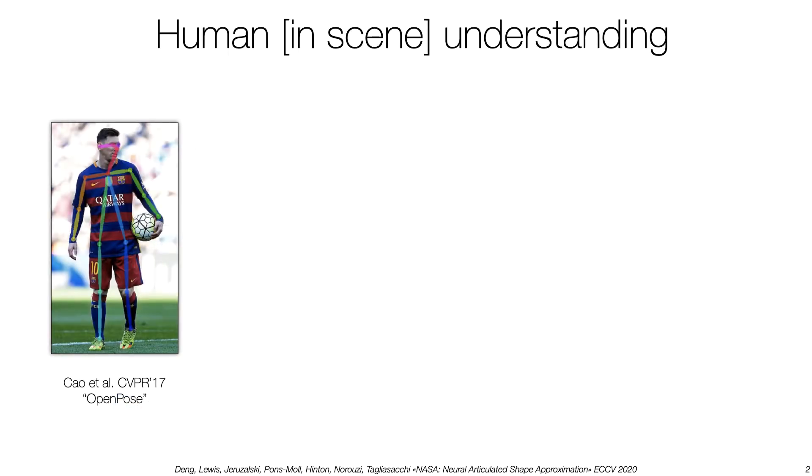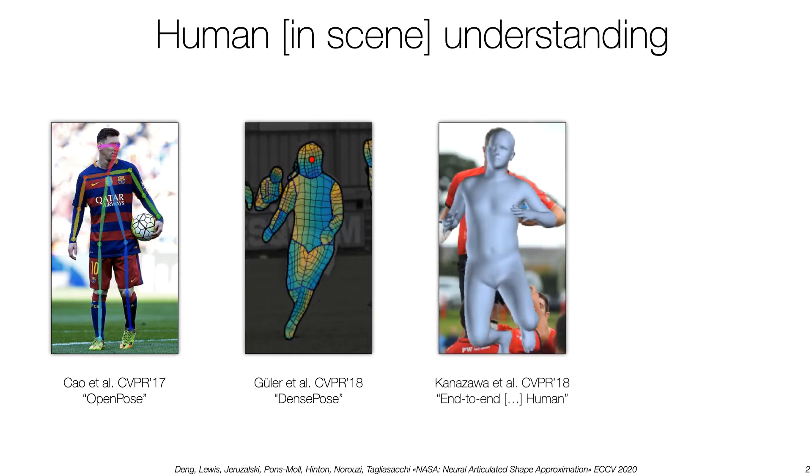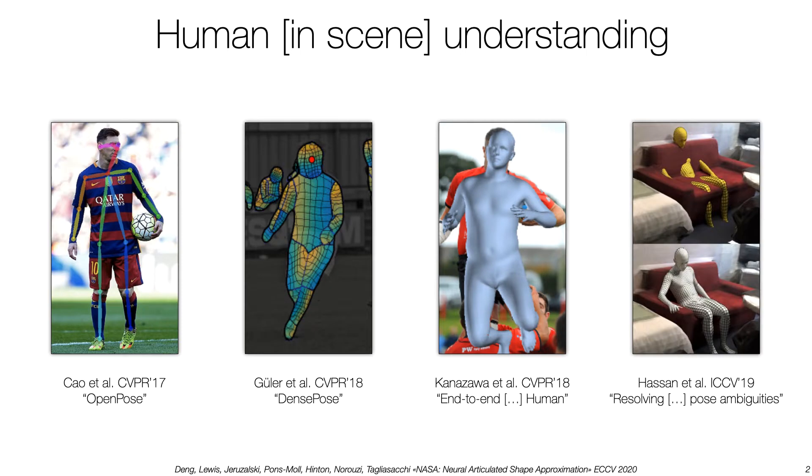Computer vision has recently made huge progress in human understanding. We have moved from representing humans as a collection of 2D keypoints, to dense image space representations, 3D surface parameterized by pose and shape, and to even account for joint human scene perception.